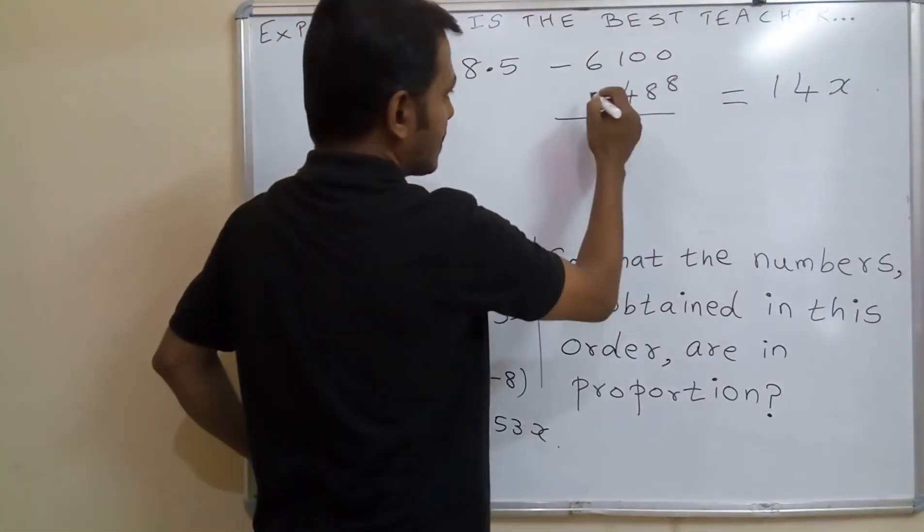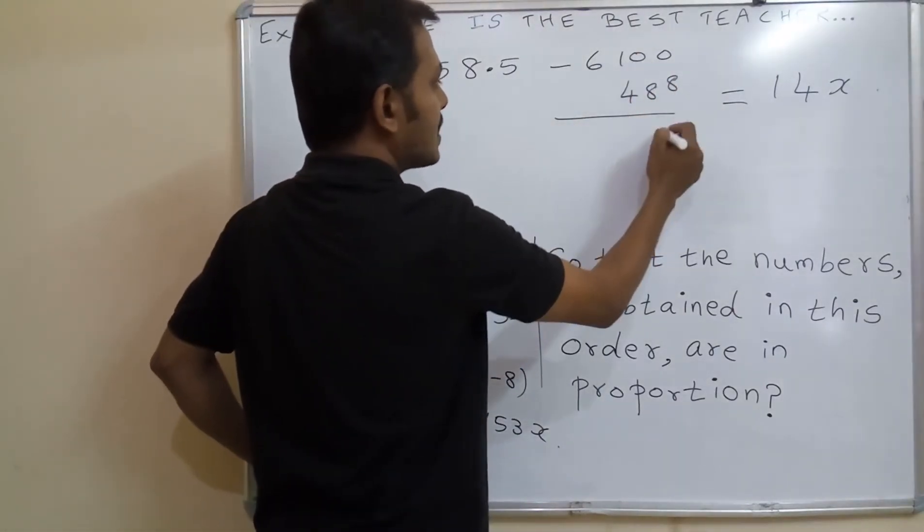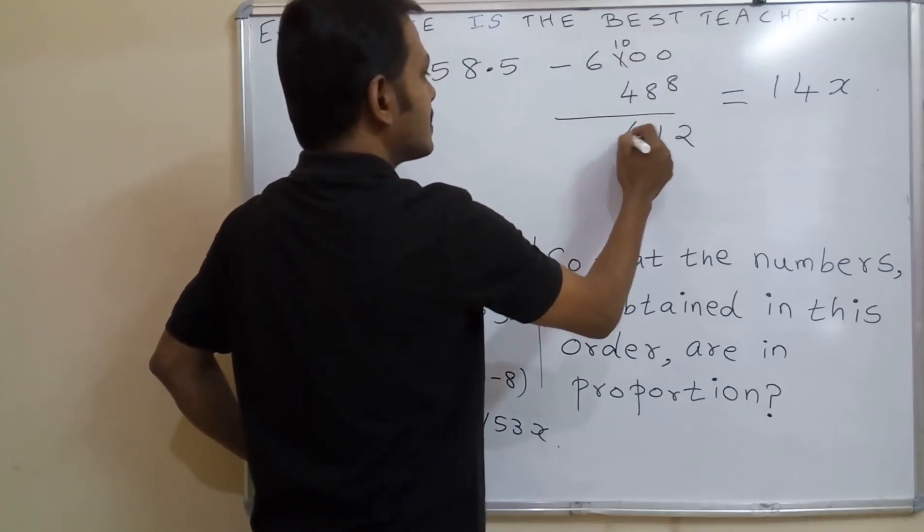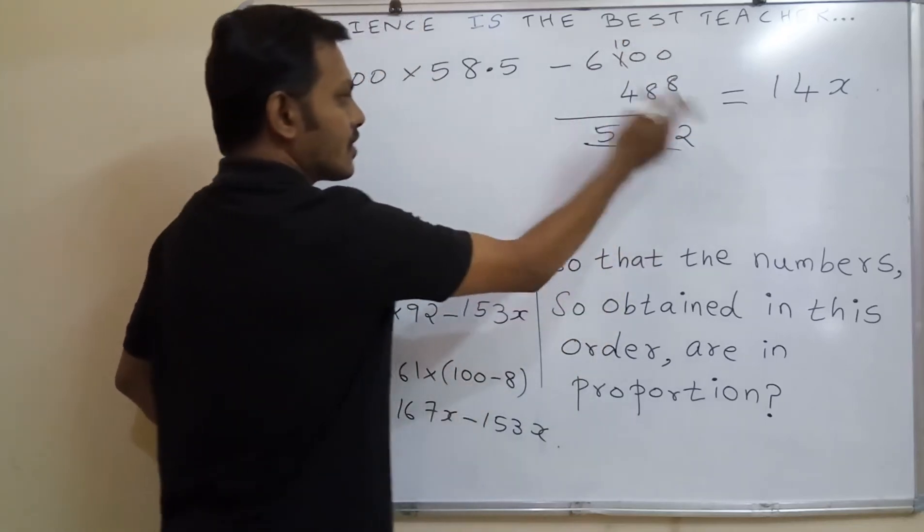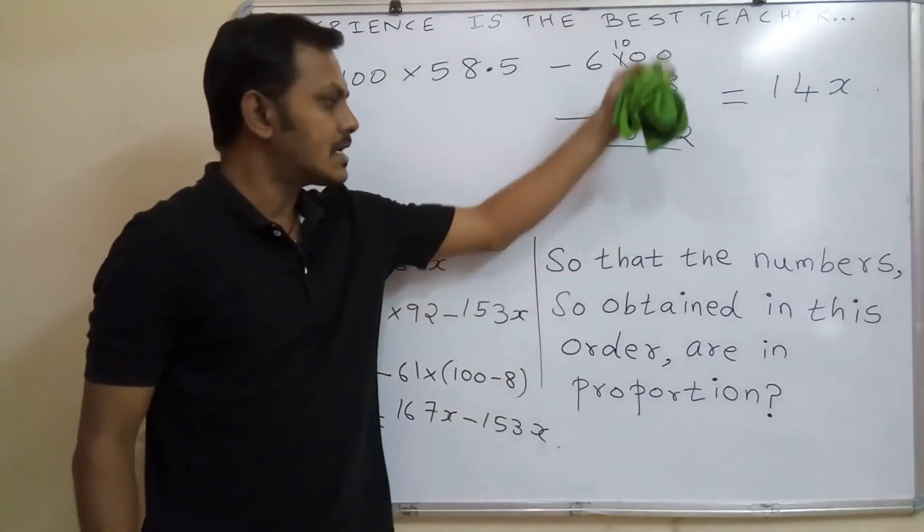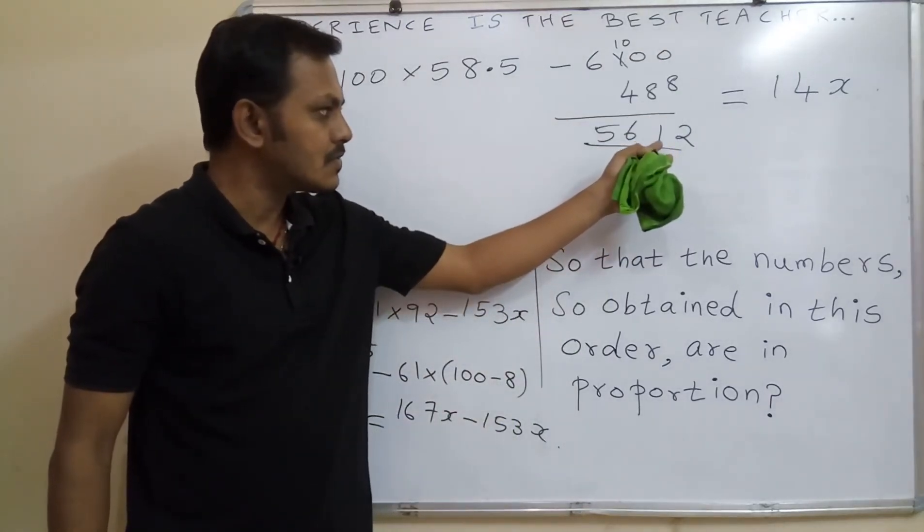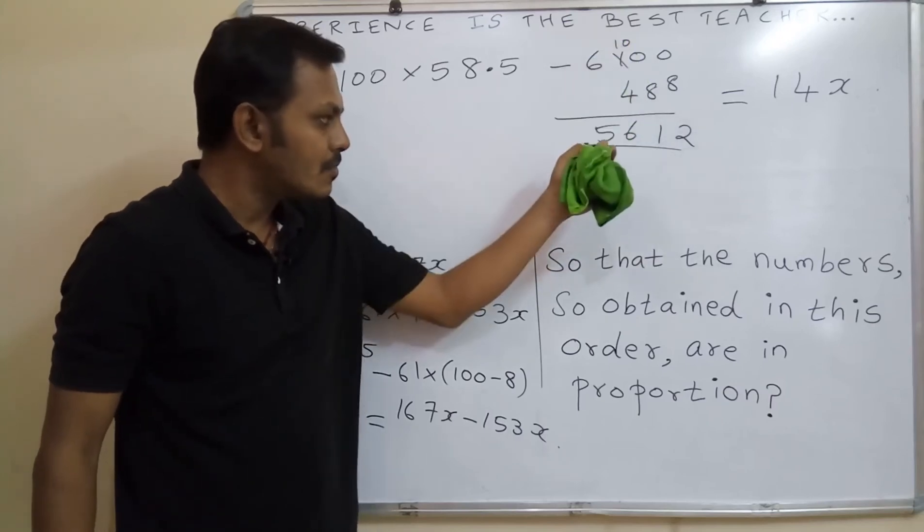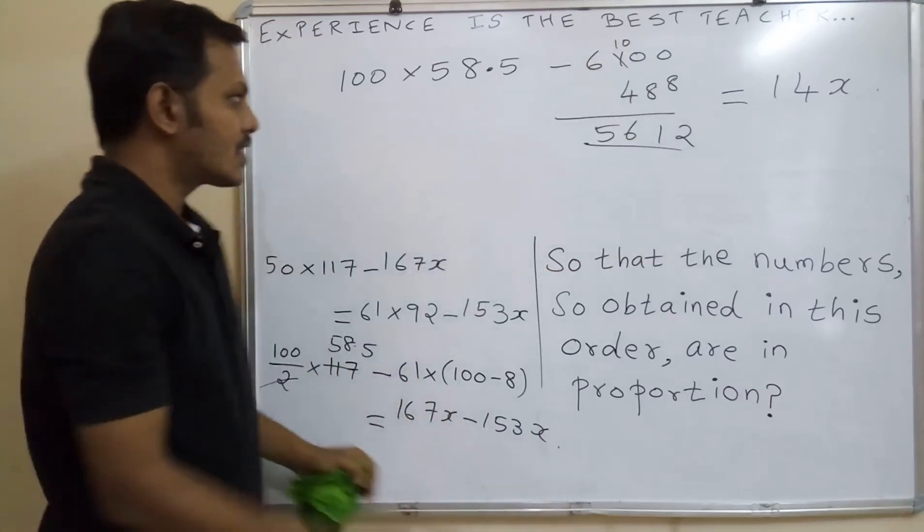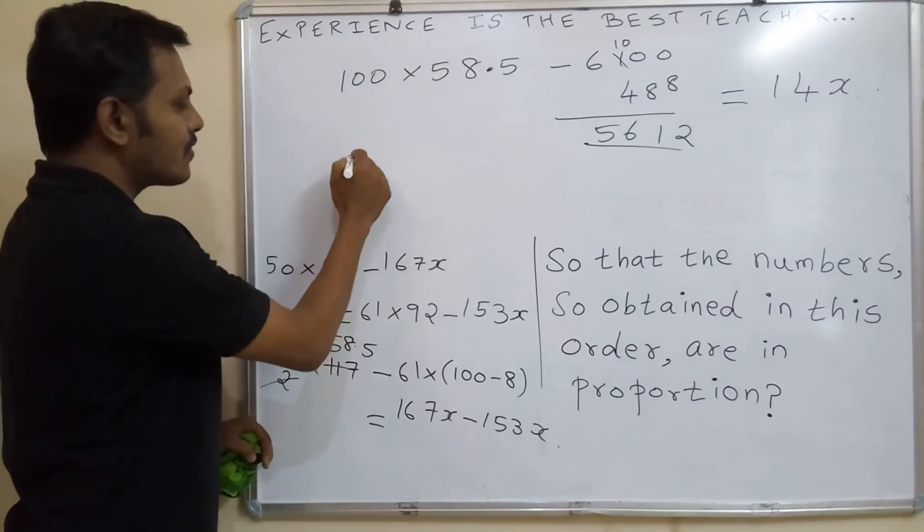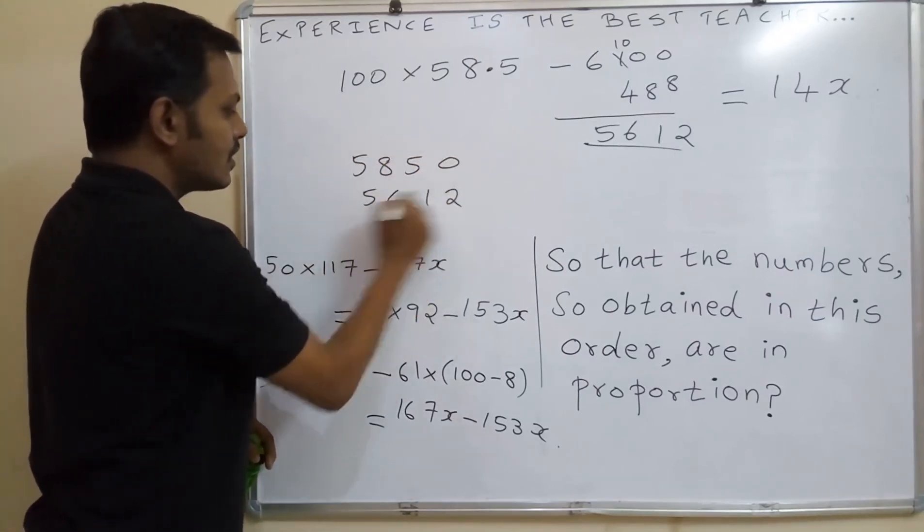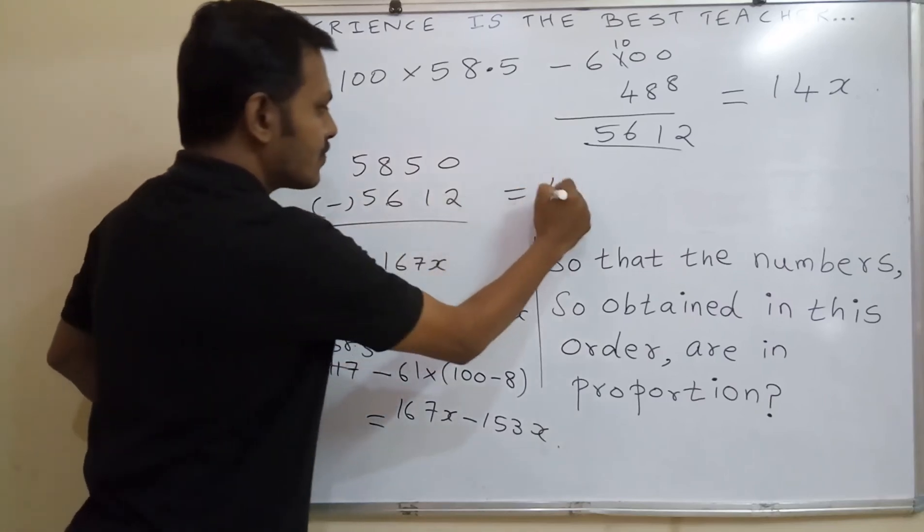By subtracting this will get 10 minus 8 is 2, 9 minus 8 is 1. It will become 10, 10 minus 4 is 6, here 5. So you can check 2 plus 8 is 10, balance is 1. 1 plus 1, 2 plus 8 is 10 again, 1. 1 plus 6, 7 plus 4 is 11, balance 1, 5 plus 1 is 6. So you got the answer, 100 into 58.5: 5, 8, 5, 0, 5, 6, 1, 2, which do you subtract, which is equal to 14x.